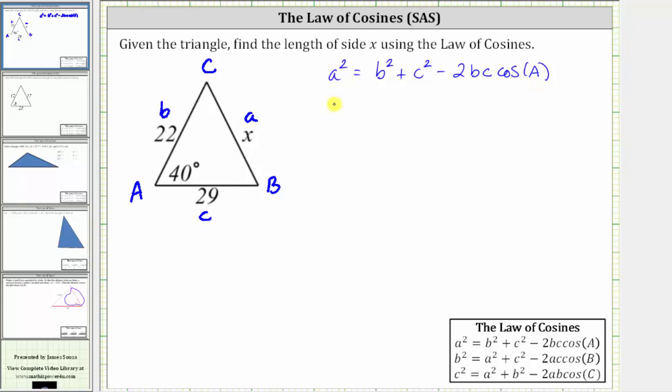This gives us a squared equals 22 squared plus 29 squared minus 2 times 22 times 29 times cosine 40 degrees.